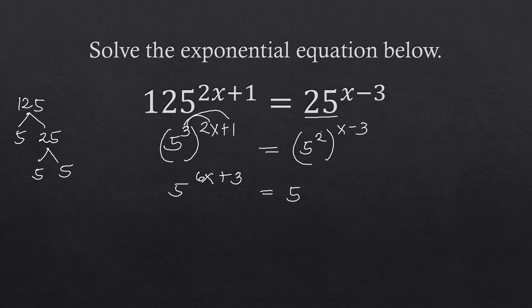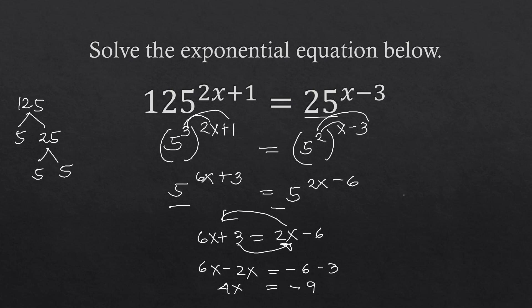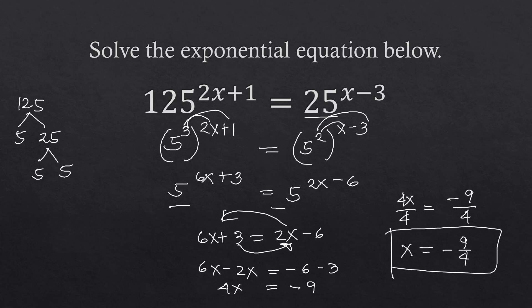Applying the power-to-power rule: left side becomes 5 to the power of (3 times 2x + 3 times 1) = 5 to the power of (6x + 3). Right side becomes 5 to the power of (2 times x + 2 times negative 3) = 5 to the power of (2x − 6). Since bases are equal, equate exponents: 6x + 3 = 2x − 6. Solving: 6x − 2x = −6 − 3, so 4x = −9, and x equals negative 9 over 4.